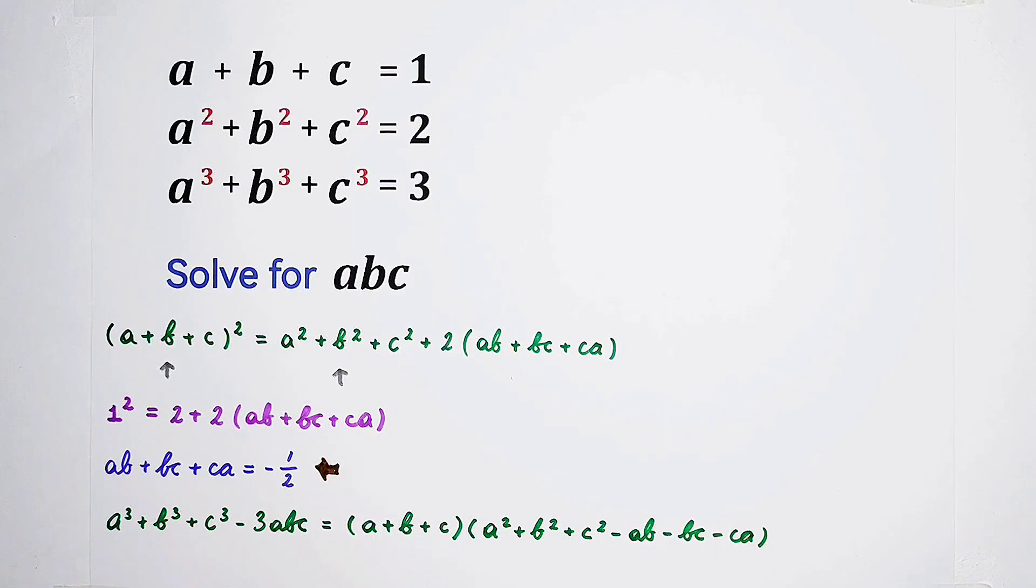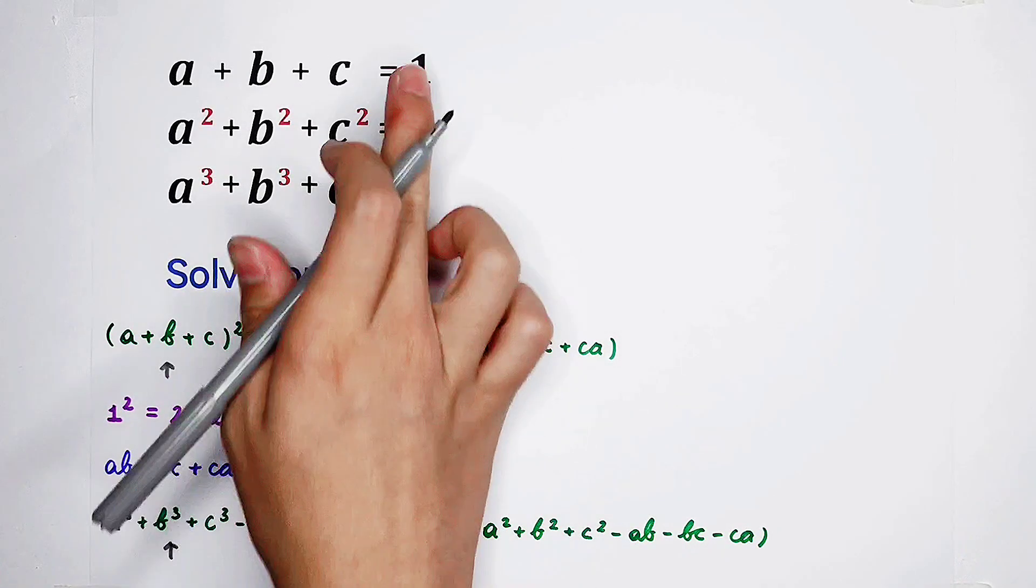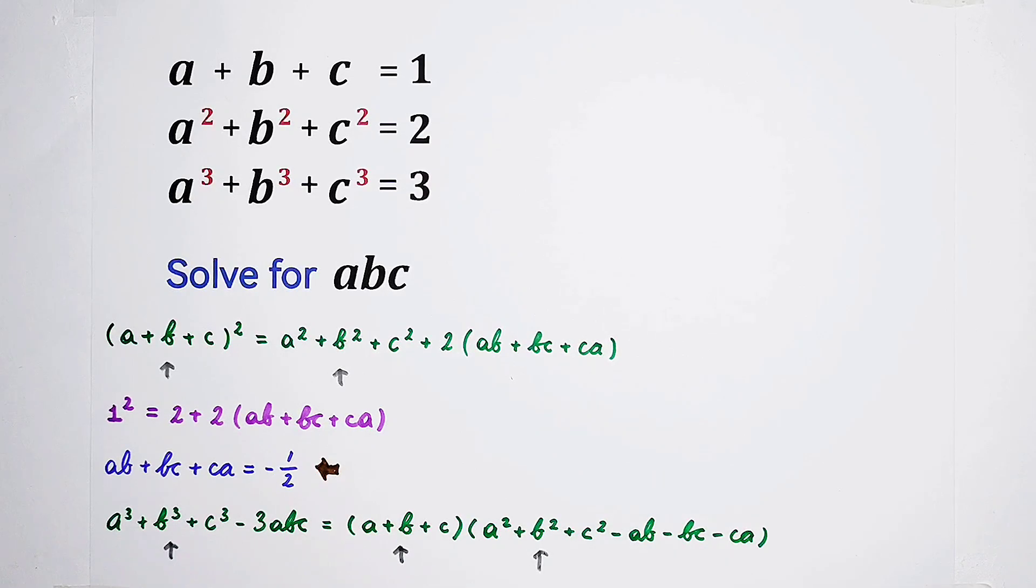So now, what can we find out? A cubed plus b cubed plus c cubed, this section, we know it is equal to 3. A plus b plus c, we know it is equal to 1. A squared, b squared, c squared, we know it is equal to 2. And here, if I take out a negative sign, it is AB plus BC plus CA in a bracket, which is equal to negative 1 over 2. So, the only thing that we don't know is the value of abc.